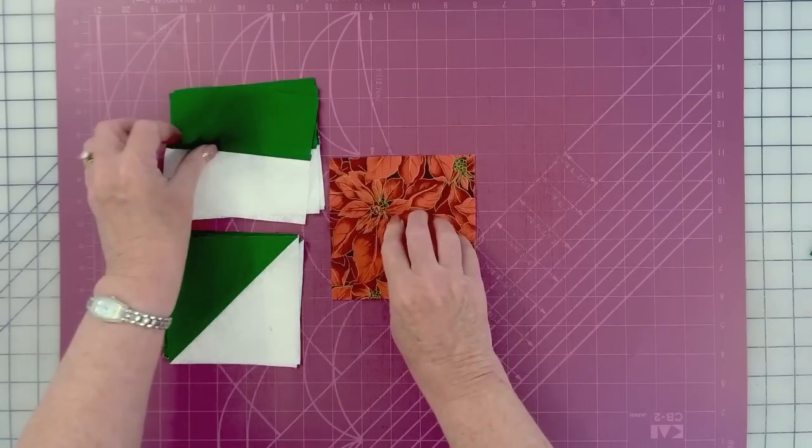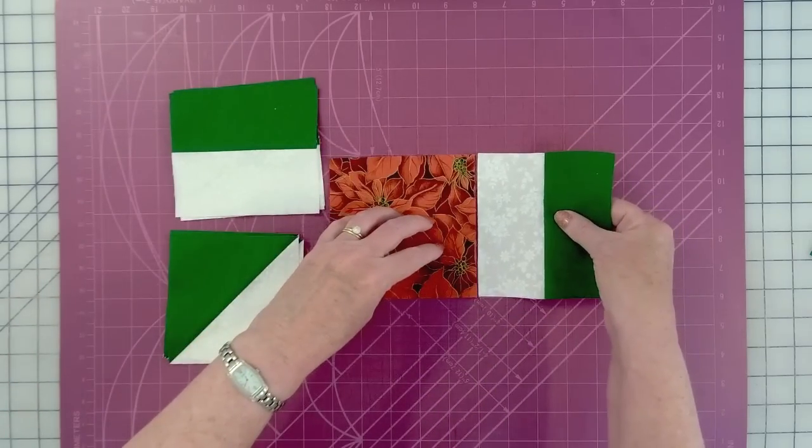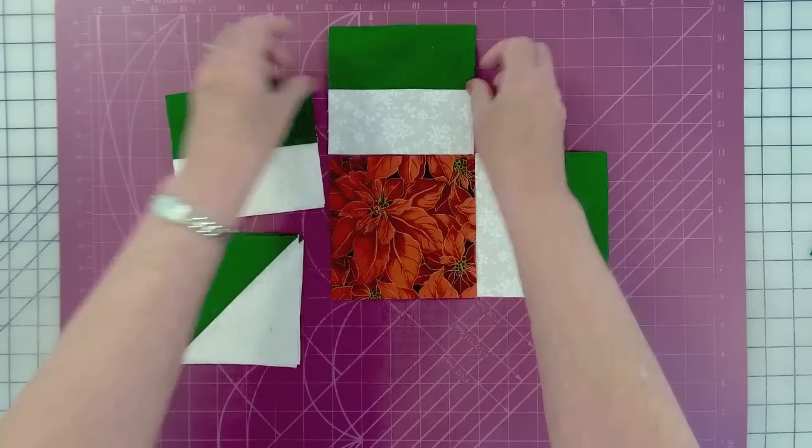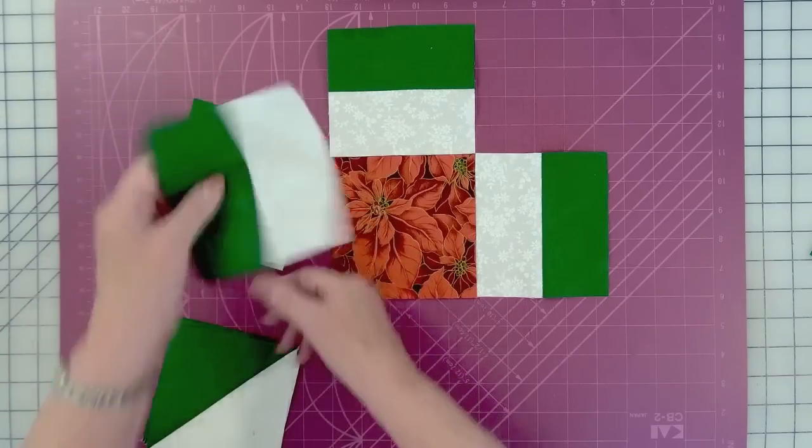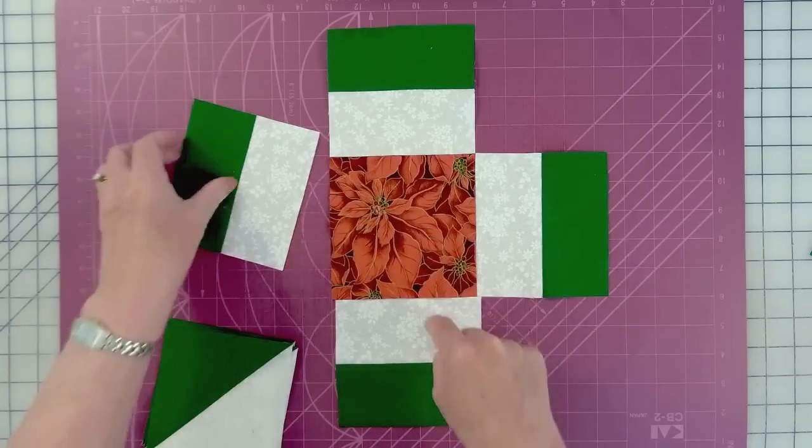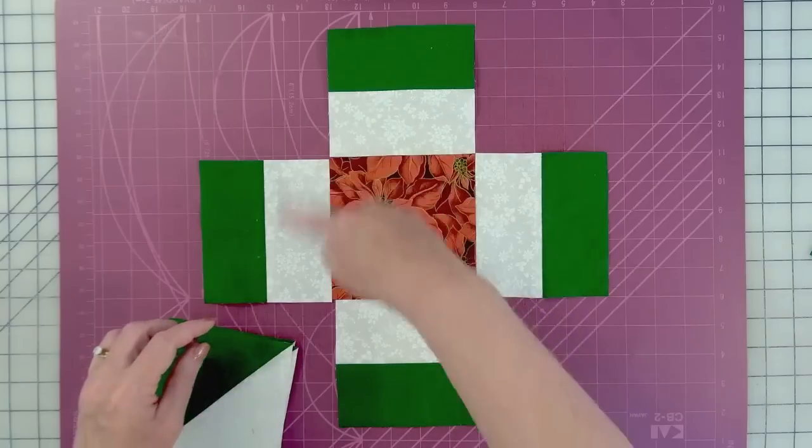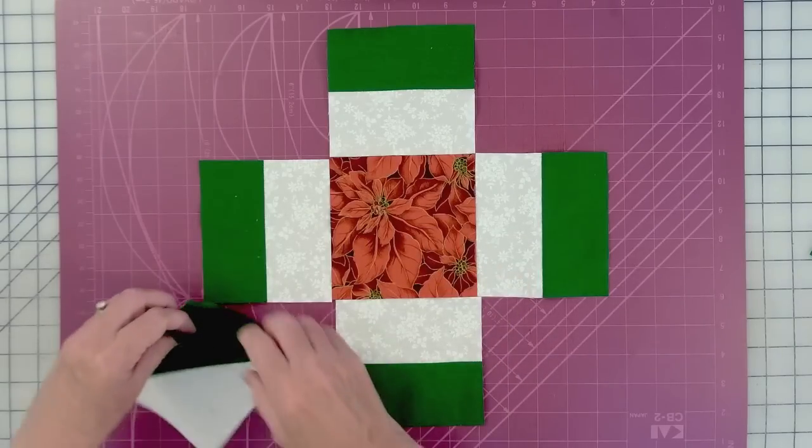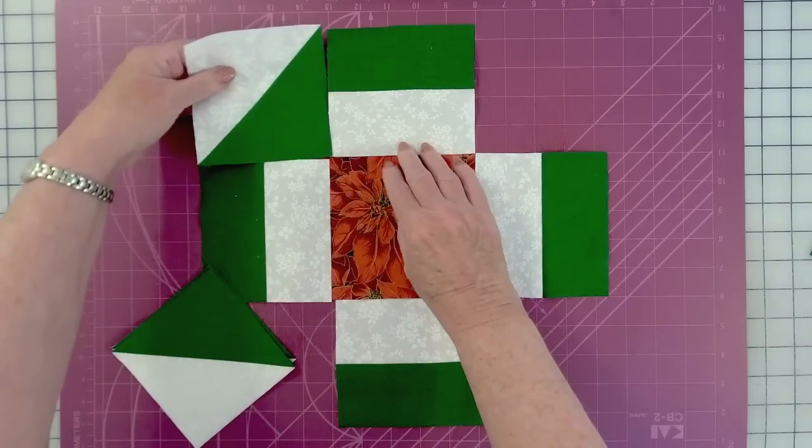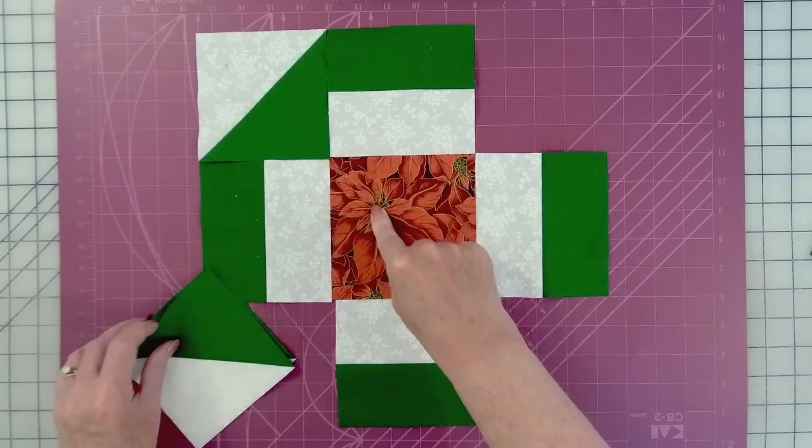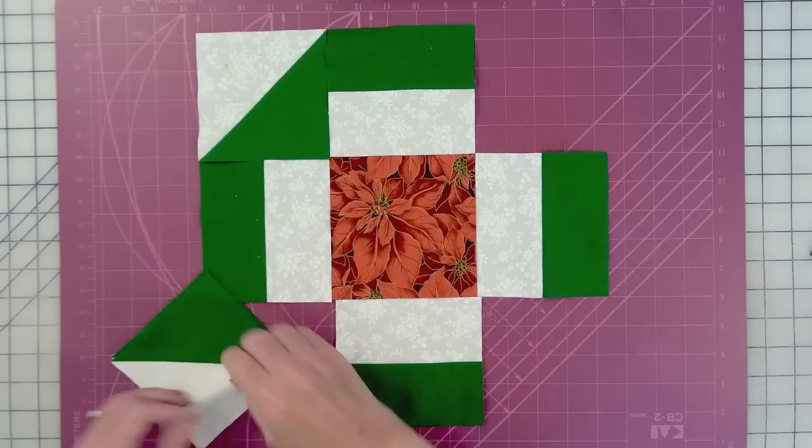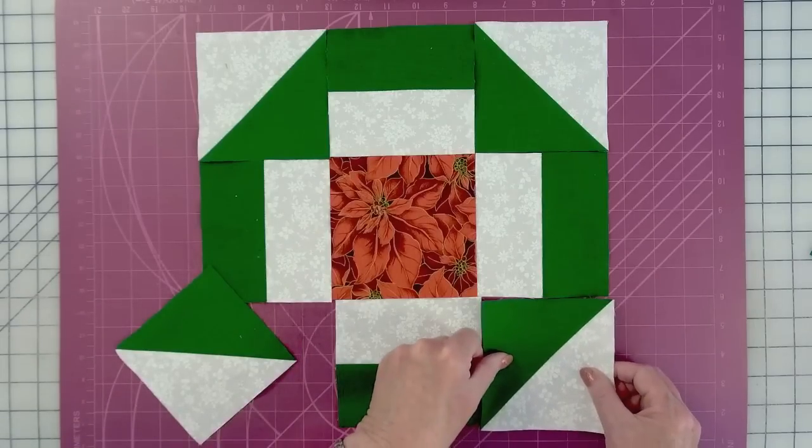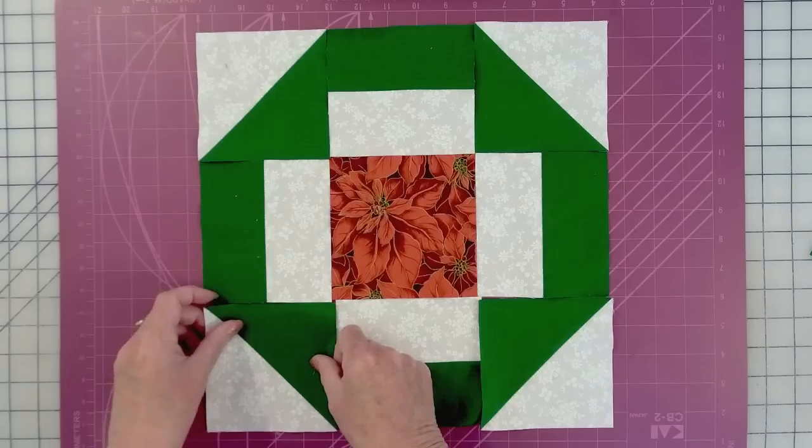So, to make this block, we're just going to take these bar blocks, and we're going to arrange them around the outside here. Notice we have the white touching the red. So, it makes like a little frame around this, or a border around the center square. Now, we're going to put the half square triangles in, and we're going to arrange them so that the dark is pointed in, and the white triangle is to the outside.